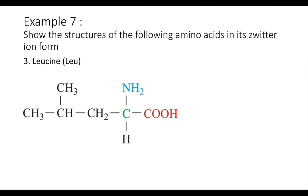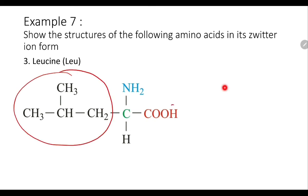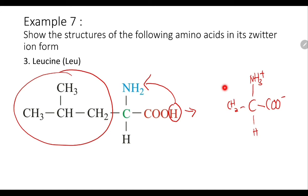For leucine, which has a long side chain, the H from COOH acts as a proton and is donated to the amino group. NH₂ accepts one H⁺ and becomes NH₃⁺, and COOH loses that H⁺ and becomes COO⁻. The rest of the amino acid follows the original structure unchanged. This is the zwitterion for leucine, which will only exist at the isoelectric point, your PI.